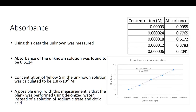Here is our data. You can see we measured these molarities of solution and these are the absorbances we got — just like the conductivity measurements, these are average absorbances over our three trials. We graphed these on a calibration curve of absorbance versus concentration and put a line of best fit on it. Our R² is 0.9968, which, just like in the conductivity section, indicates that the data fits the curve well.